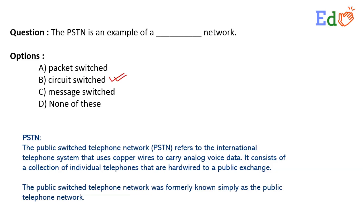The calls are placed and routed through multiple different switches. The calls get connected through these switches, which are found in a central office — abbreviated as CO. Voice signals are able to travel over the connected phone lines through this circuit switched network. So option B, circuit switched, is the correct answer for this question.